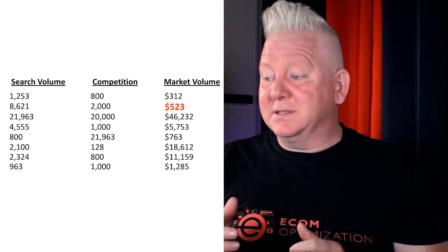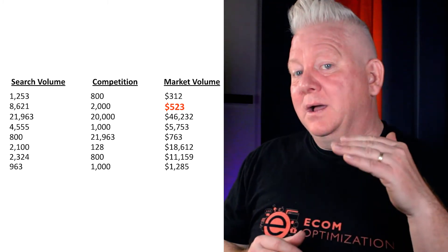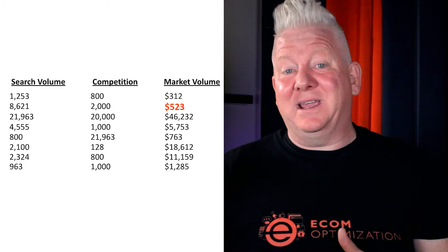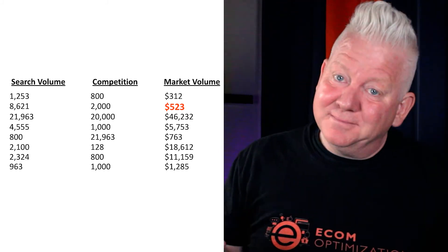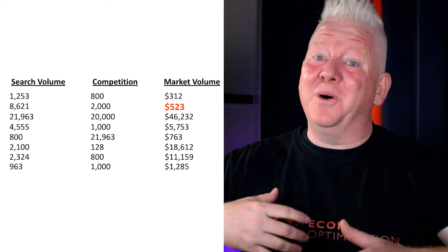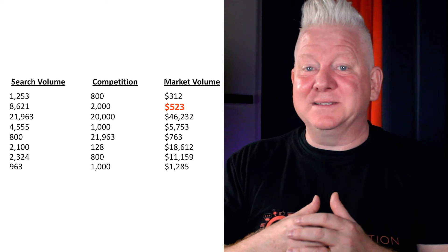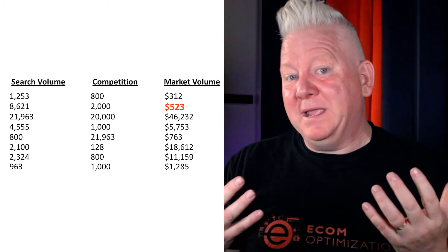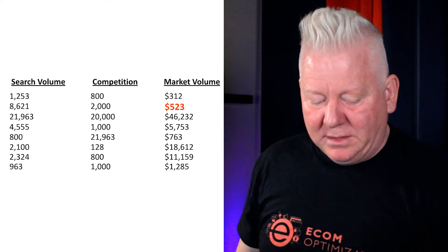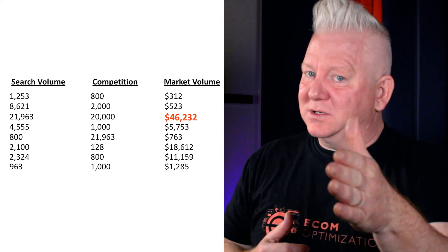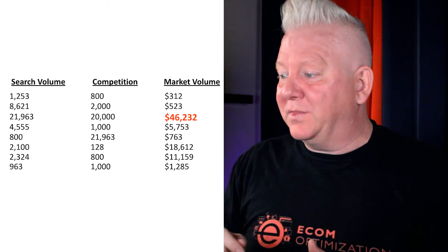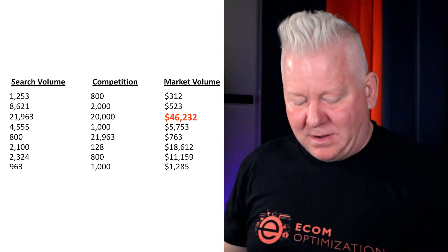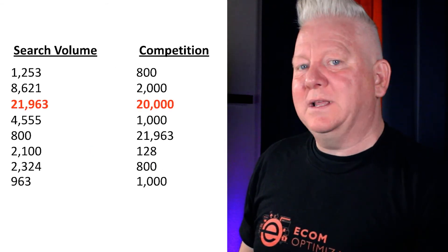Looking at this, one phrase has only $523 flowing through it per month. Originally I might have thought that was a good phrase — it had 8,000 searches per month and only 2,000 competitors. But when I see it only has $523 on it per month, I'm not interested in putting all the effort into optimizing for that phrase when we're going to have to split $523 between all competitors on page one just to begin to rank and compete for it.